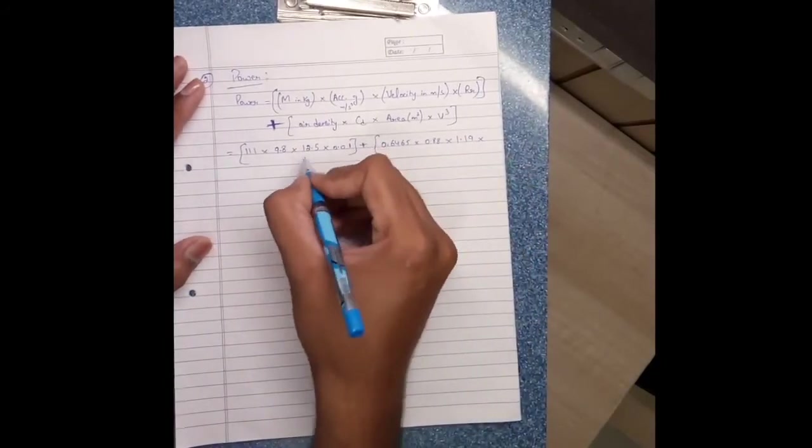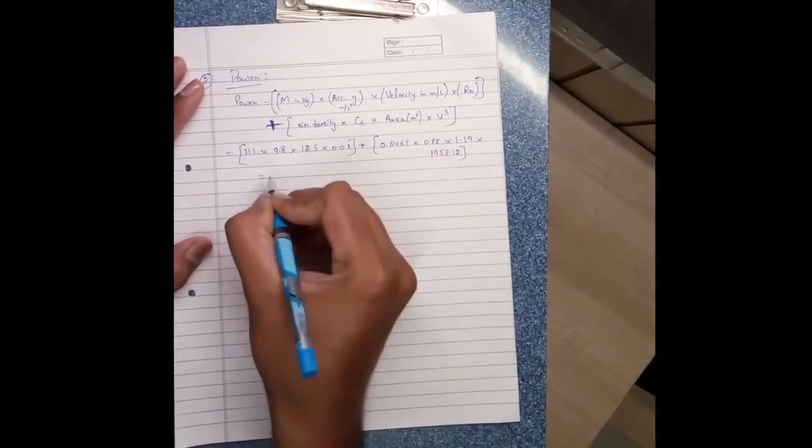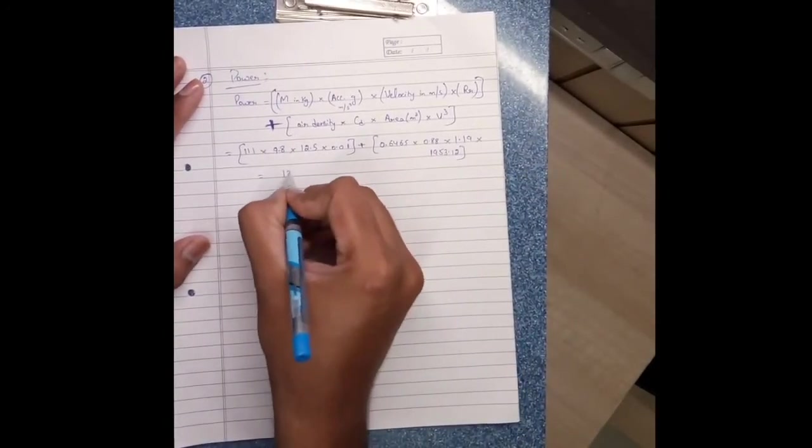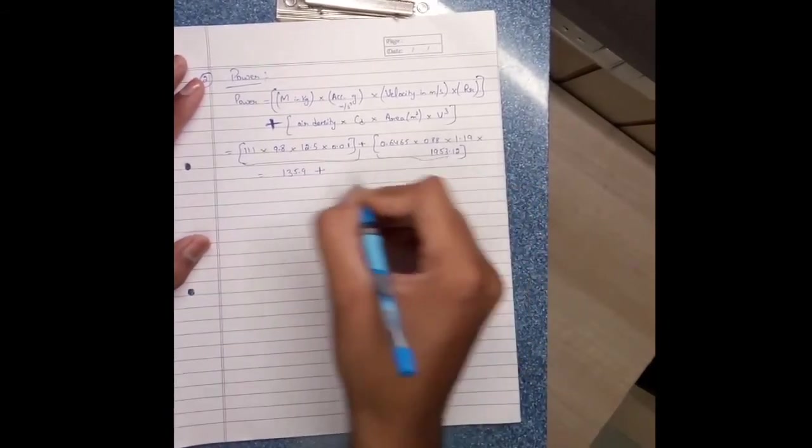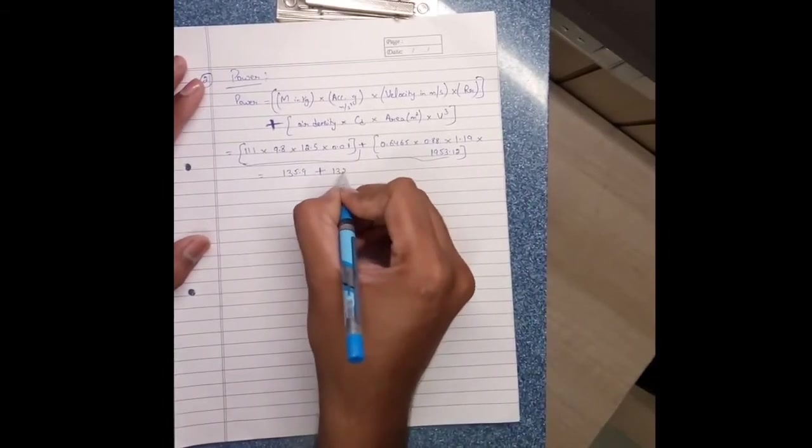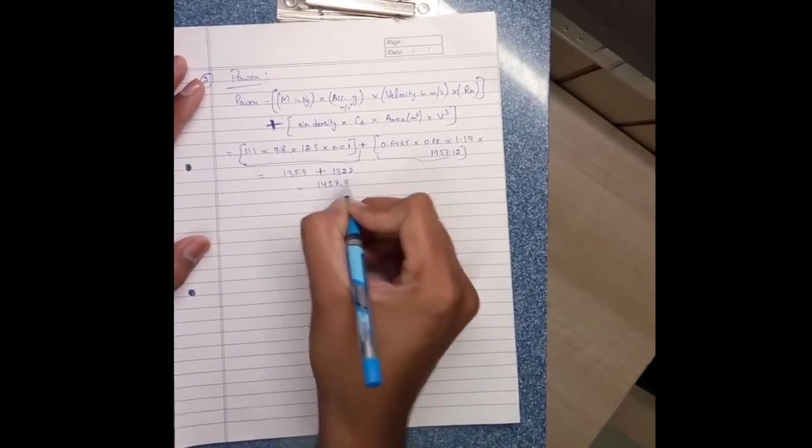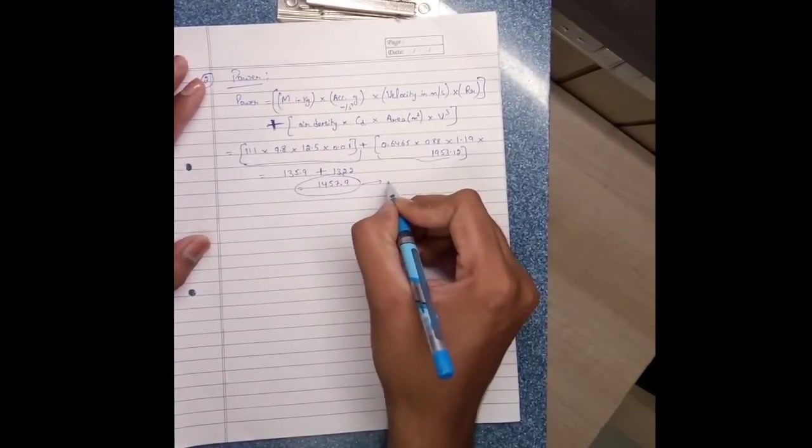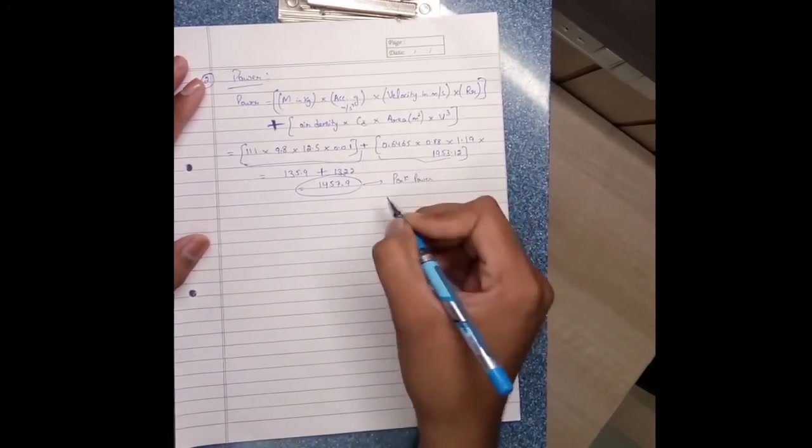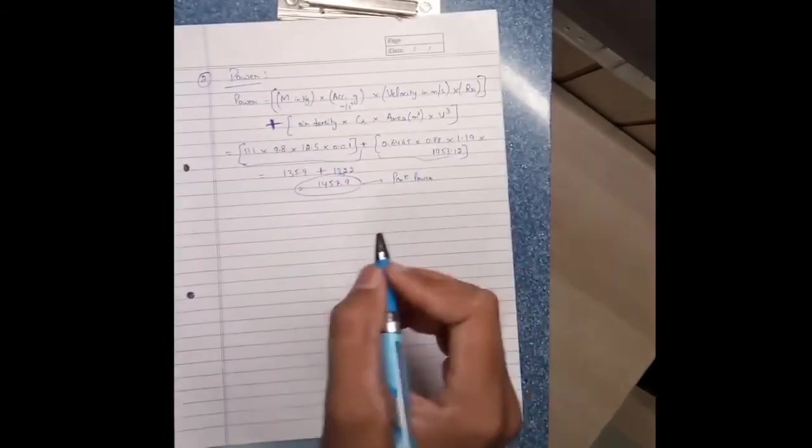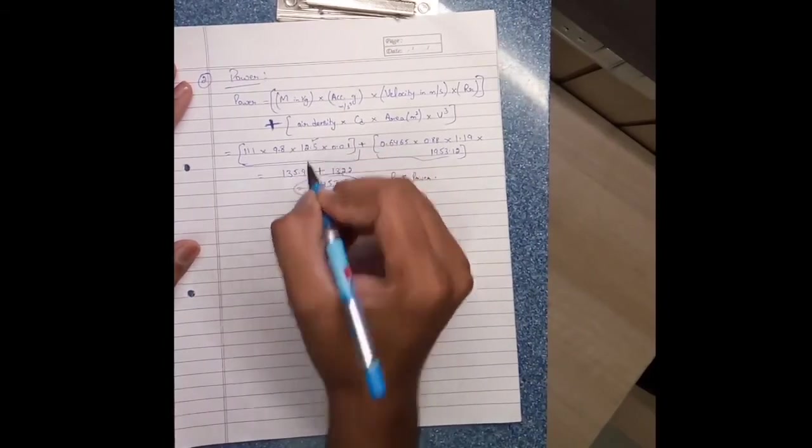1953.12 becomes 135.9. This plus this is 1320. So this is the peak power, or we can say that maximum power, that is required at 12.5 meters per second, means 45 km per hour.